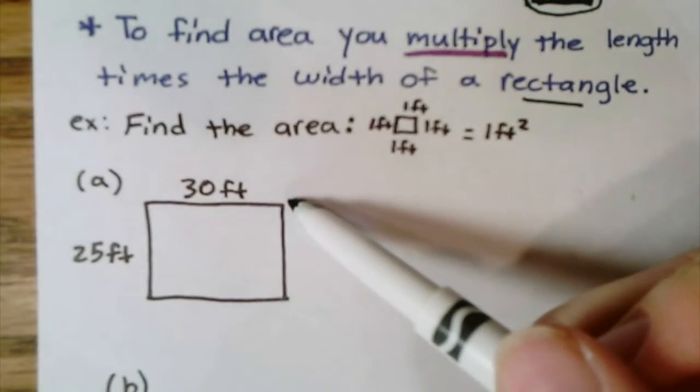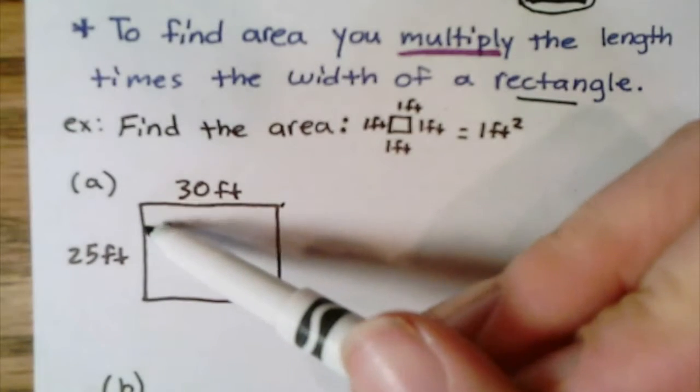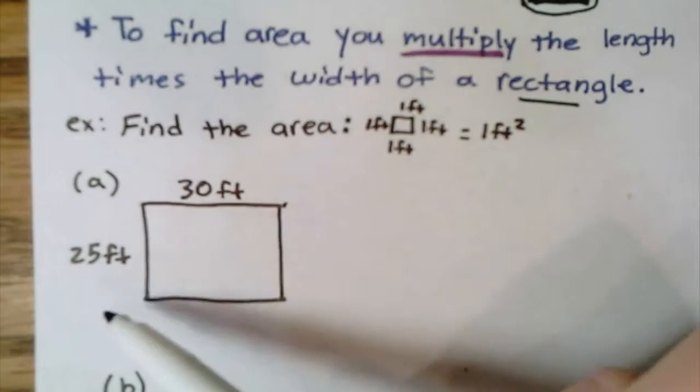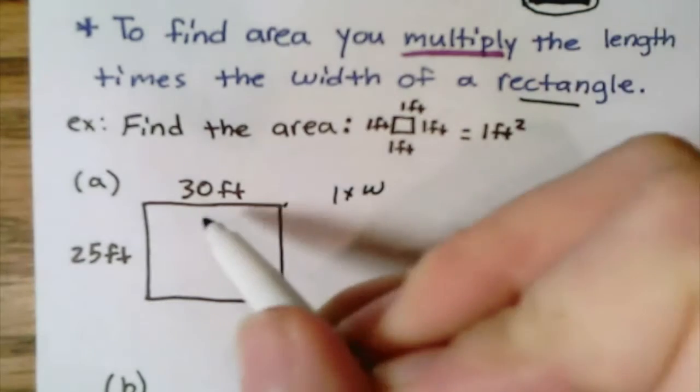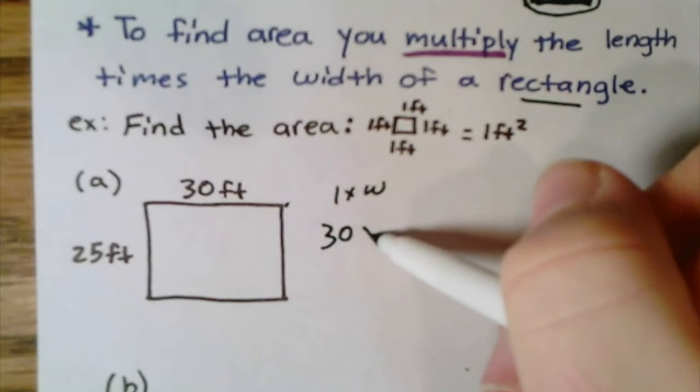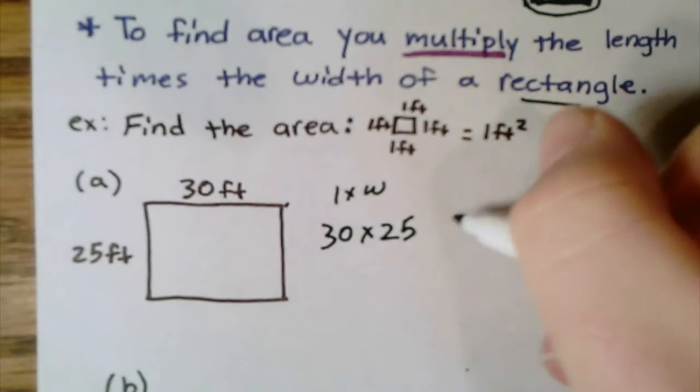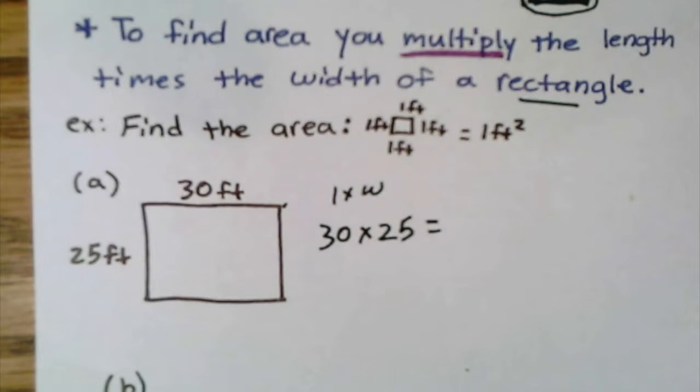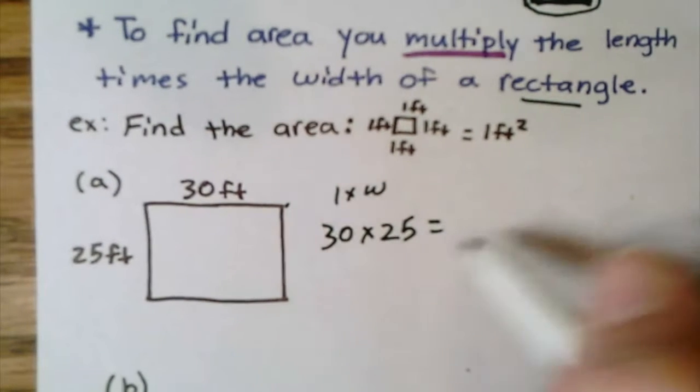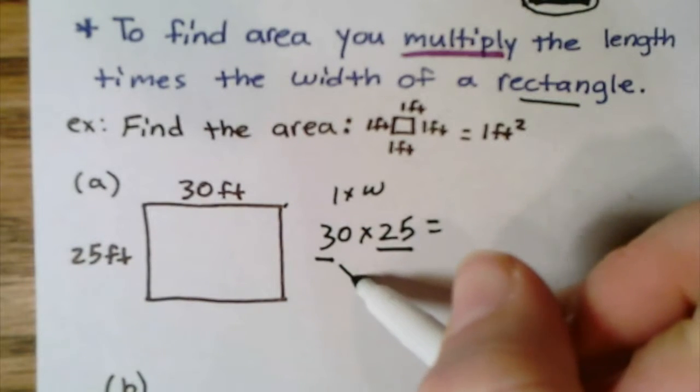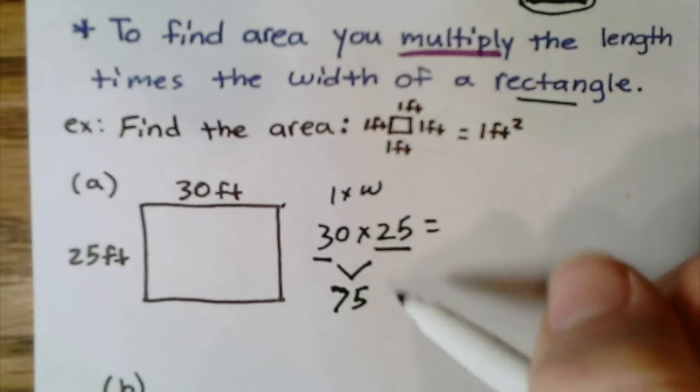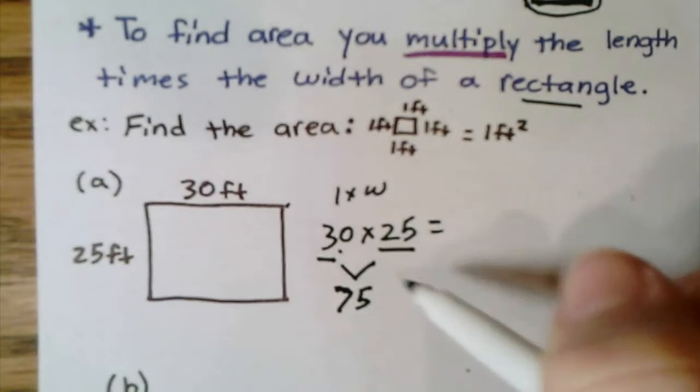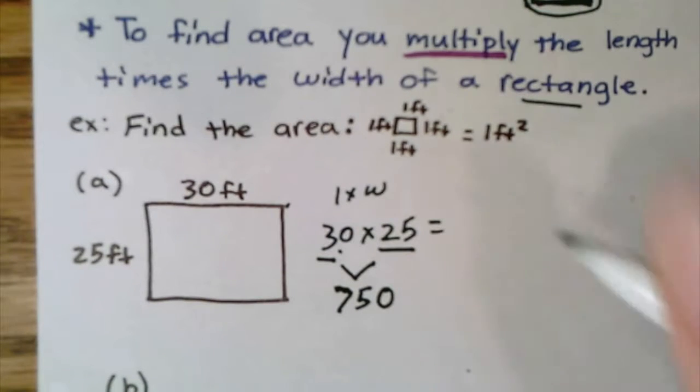It's just the length times the width, so I'm going to multiply 30 times 25. I can use my mental math strategy: 25 times 3 is 75—I know that from money because 3 quarters is 75 cents—and then I'm multiplying by 30, which means I add another zero. So this is 750 square feet.